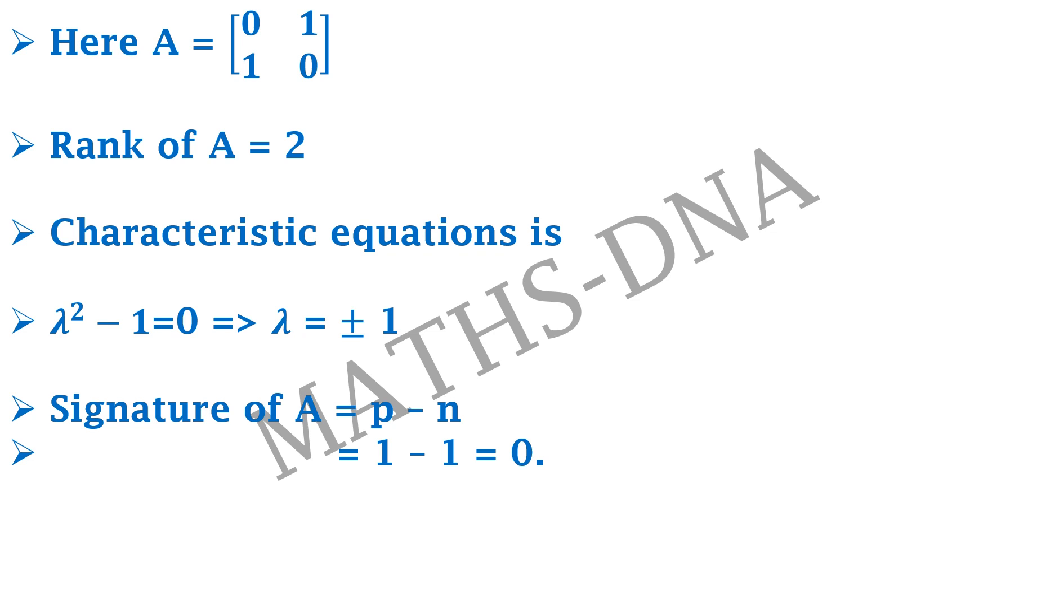Now we need to find another matrix of the same rank that is 2 and same signature that is 0 from all the four options.